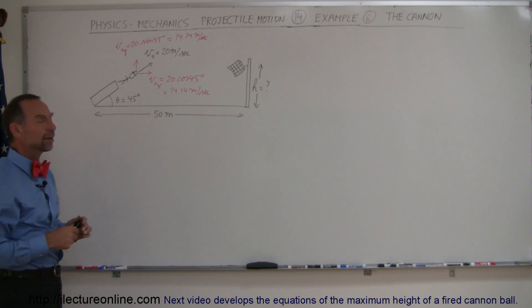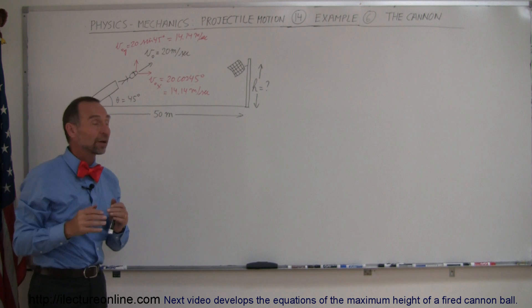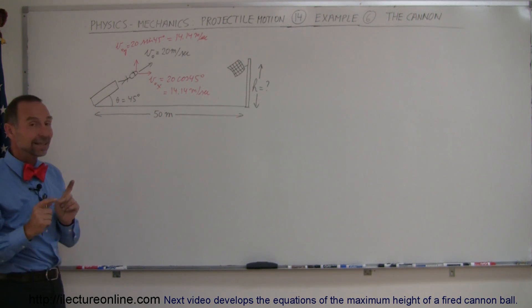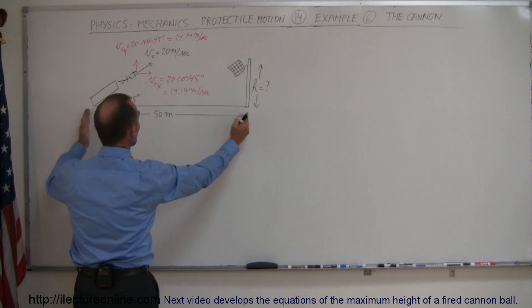So next we want to find time in the air, but since we don't know the final height, we cannot use the y direction to find the time in the air, but we can indeed find the time in the air using the x direction because we know the x distance.